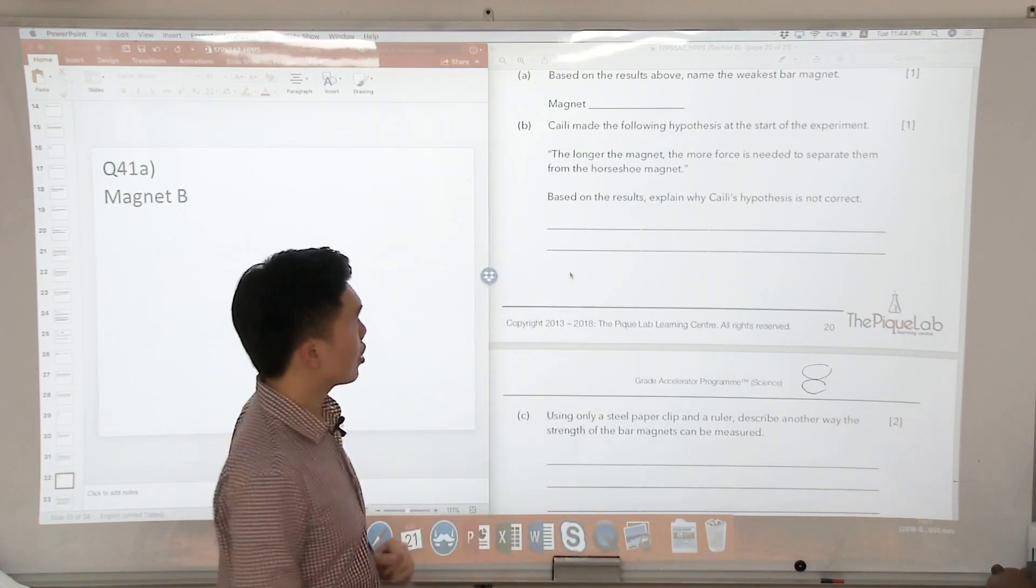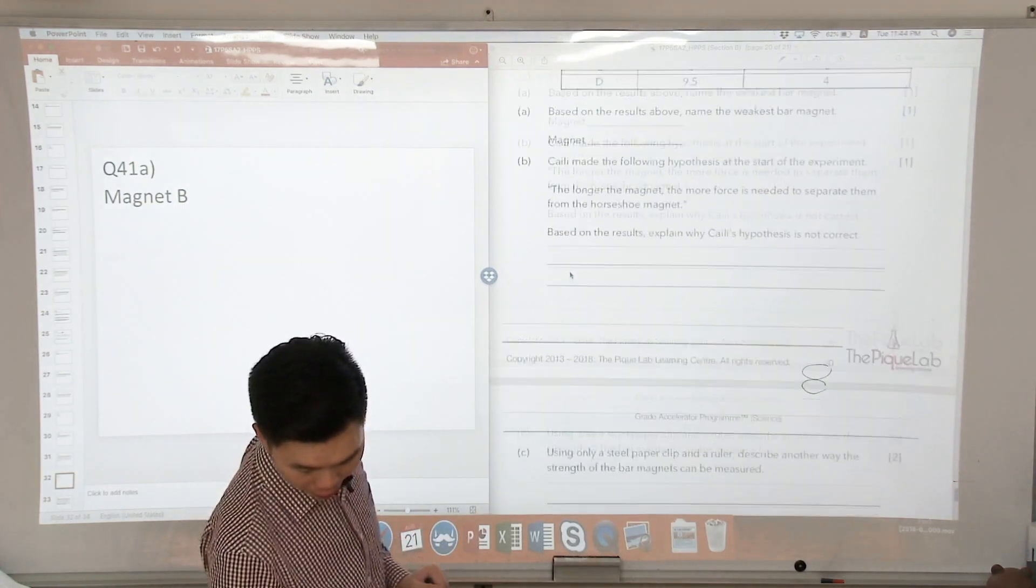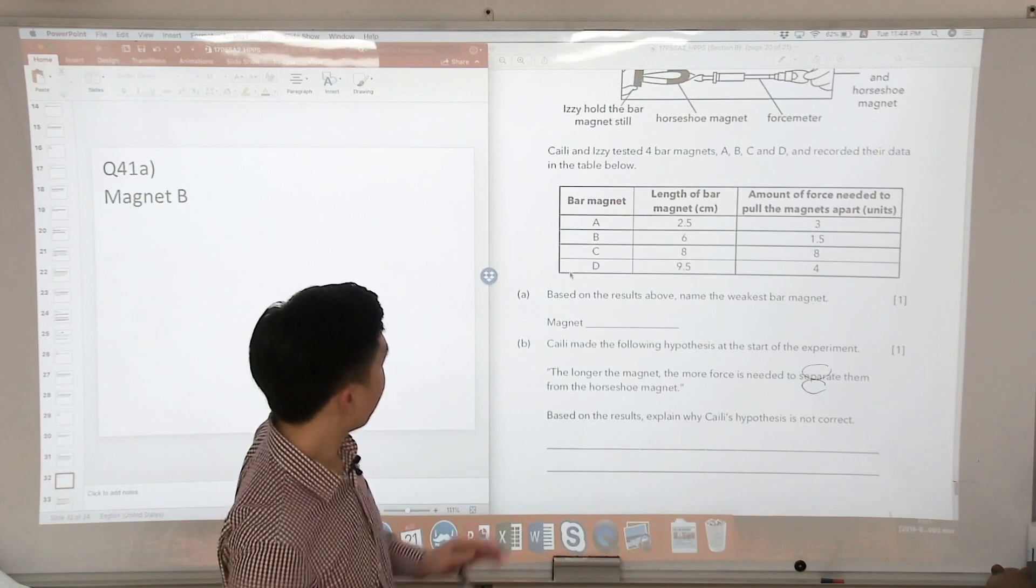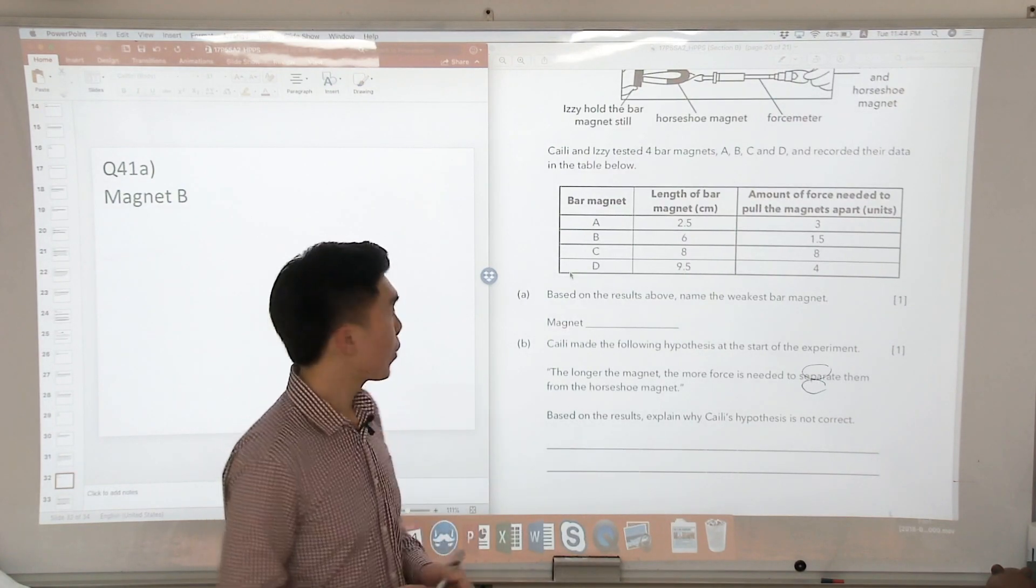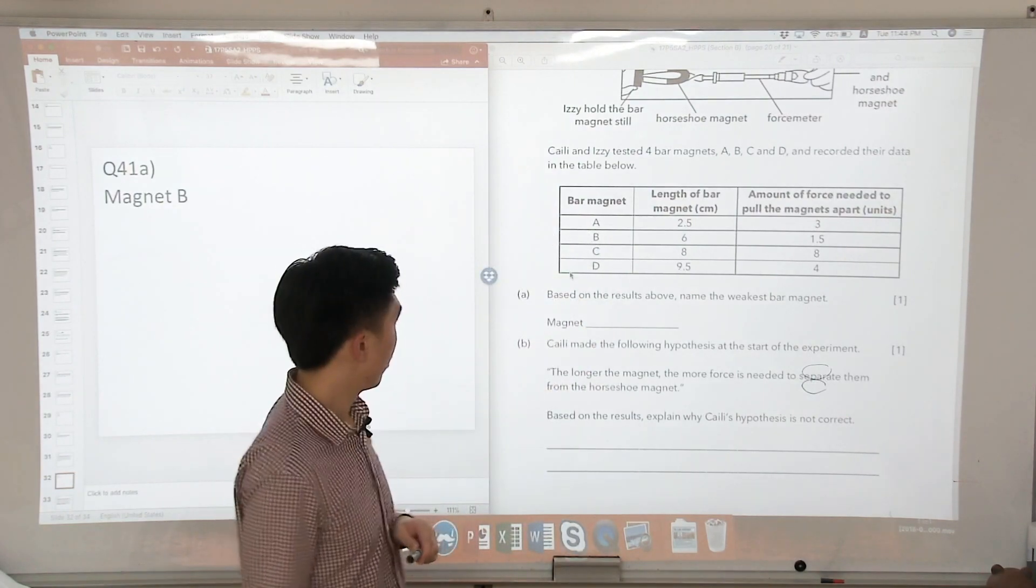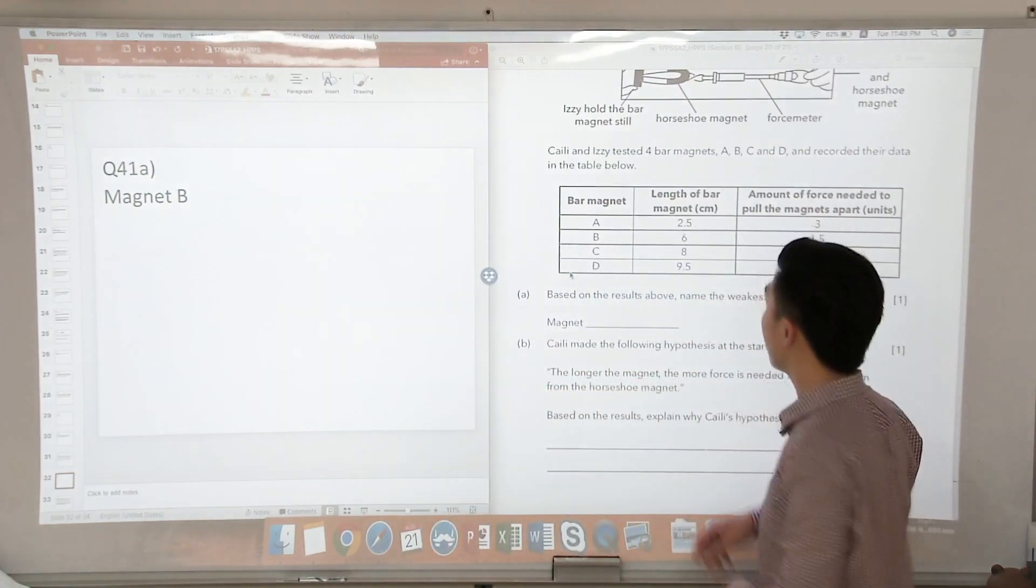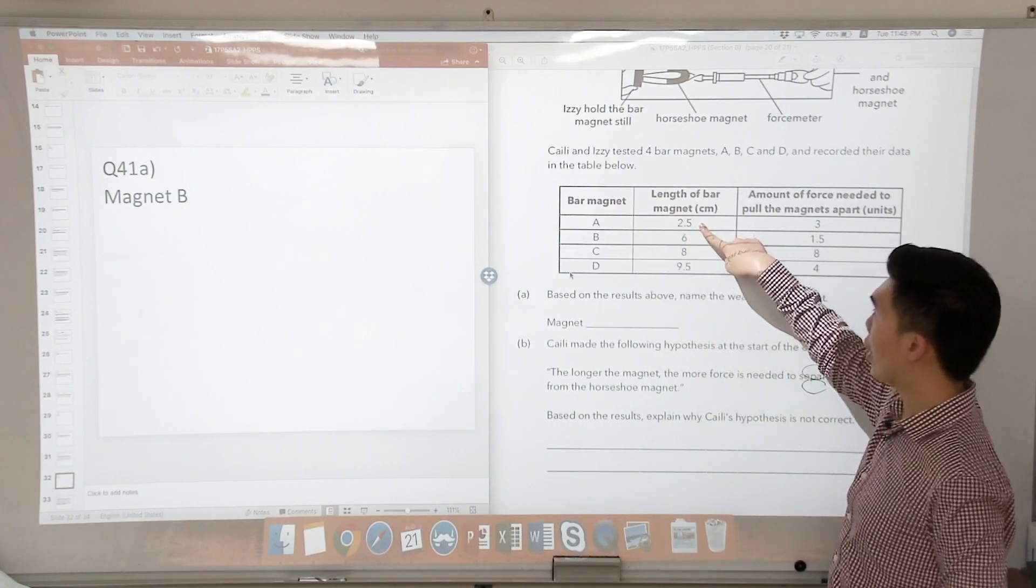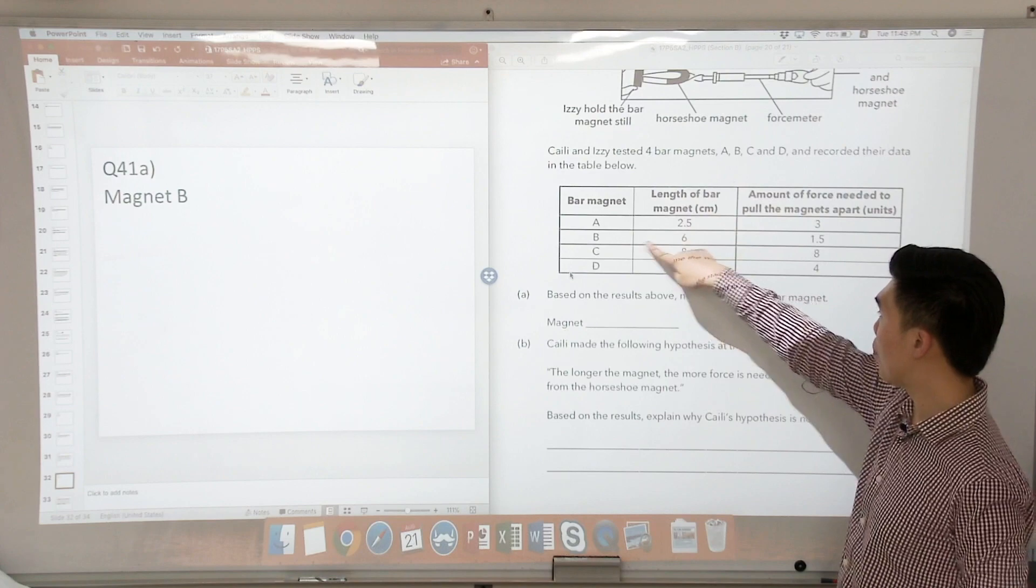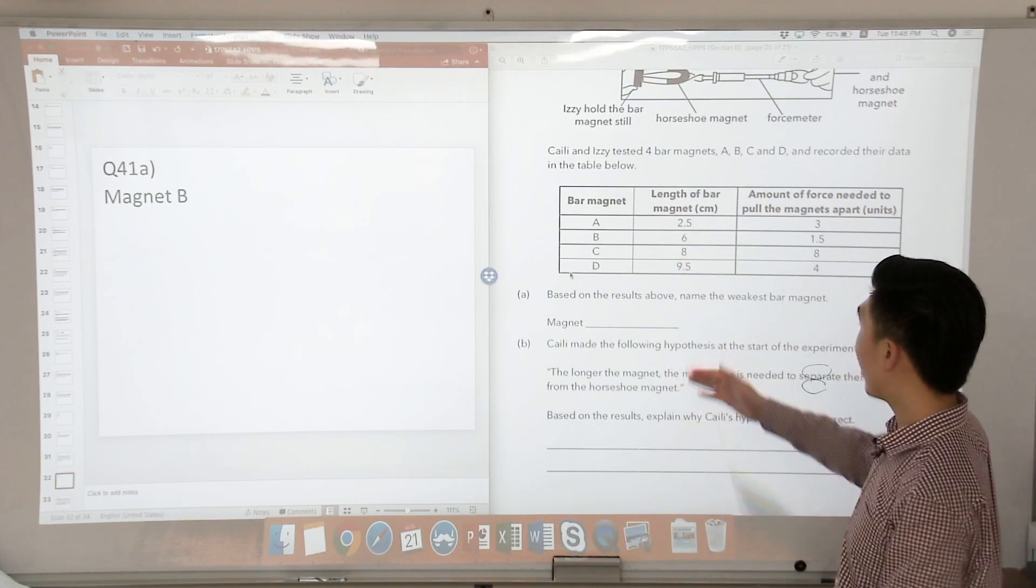So based on the results, explain why Kylie's hypothesis is not correct. If you look at this data here, there are two ways that we can go about it. We can either compare bar magnet A and B or we can compare C and D. So let's say we compare A and B. A, the length of the bar magnet is shorter than B. So shorter, you will think that it is weaker, right, based on Kylie's hypothesis.